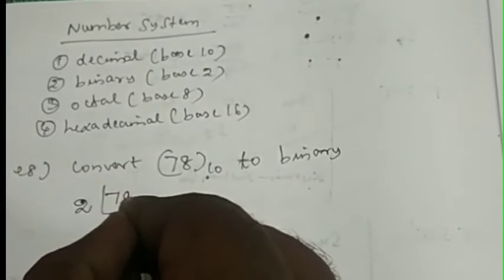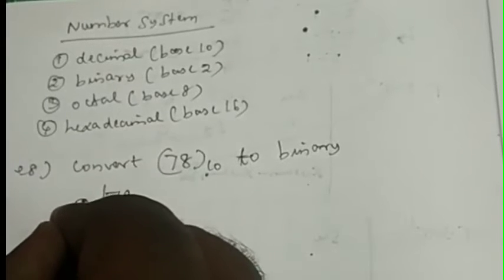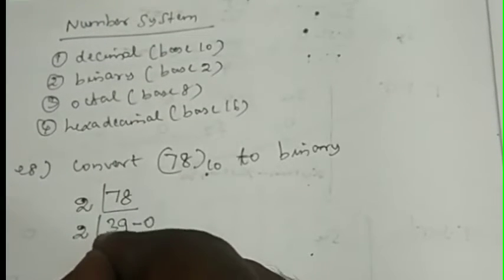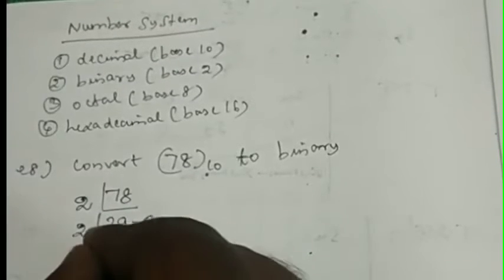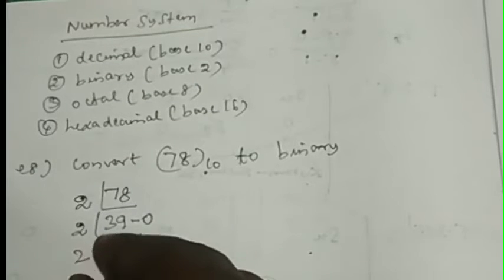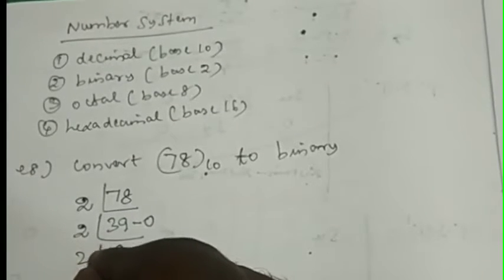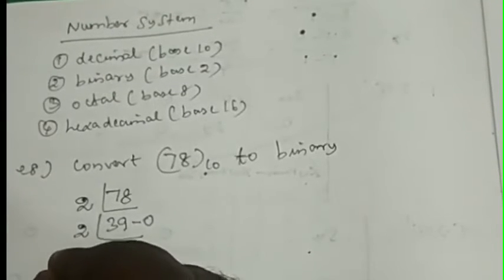When you divide 78 by 2, you get 39 and a remainder of 0. Again, divide 39 by 2 to get 19 with remainder 1. Divide again to get 9 with remainder 1. Then 9 divided by 2 gives 4 with remainder 1. Divide 4 by 2 to get 2 with remainder 0. Finally, 2 divided by 2 gives 1 with remainder 0, and 1 divided by 2 gives remainder 1 with quotient 0.